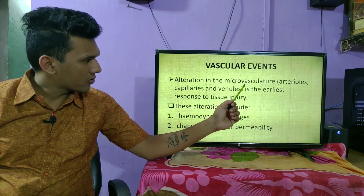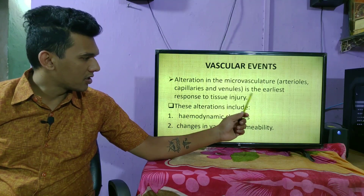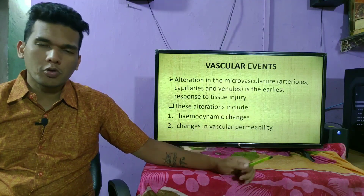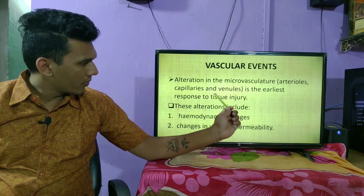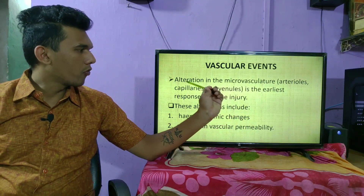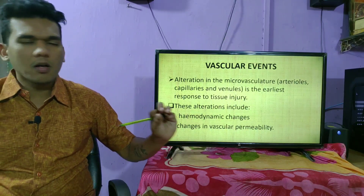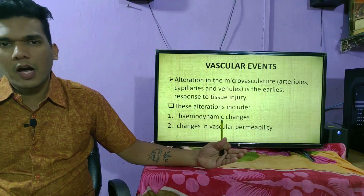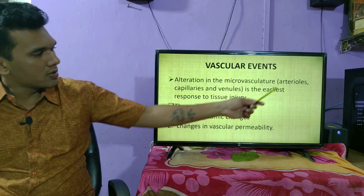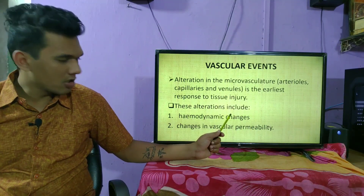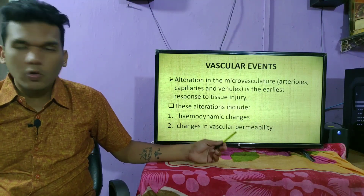Alteration in the microvasculature — that is arterioles, capillaries, and venules — is the earliest response to tissue injury. Acute inflammation is a local response to tissue injury, and the first step is alteration in these microvascular structures. These alterations include hemodynamic changes and changes in vascular permeability.